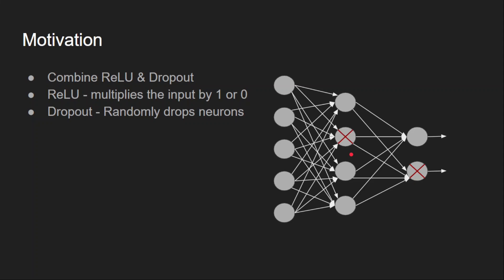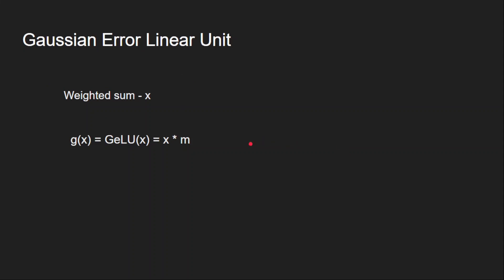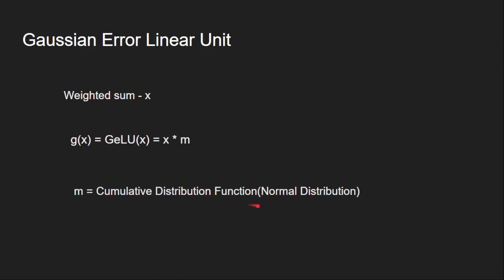GELU is a deterministic non-linearity that encapsulates a stochastic regularization effect. Simply put, if this is my weighted sum, in GELU I am multiplying my input with a value m. This value m is the cumulative distribution function of the normal distribution evaluated at that particular input.